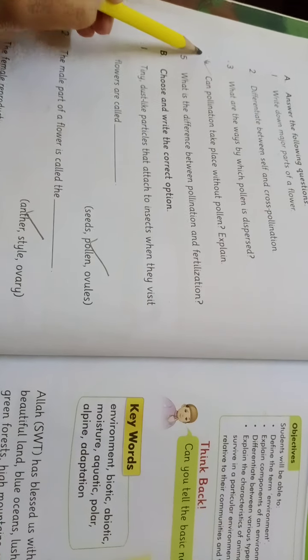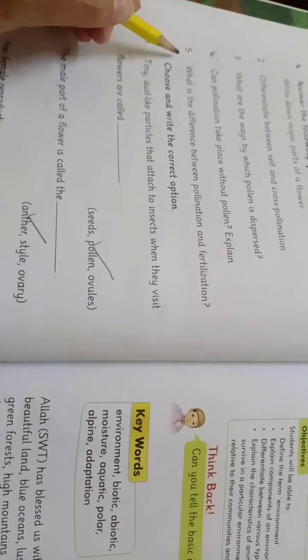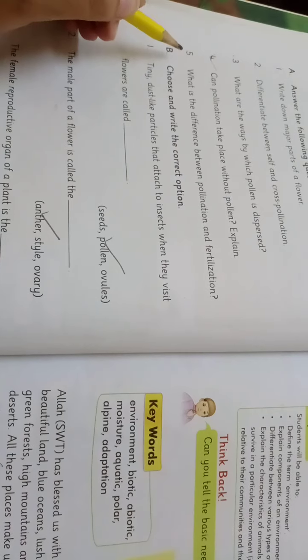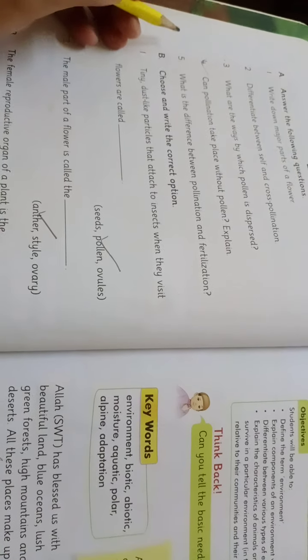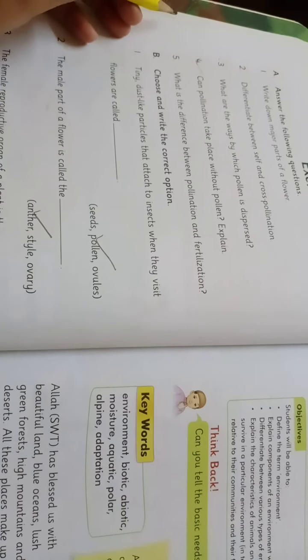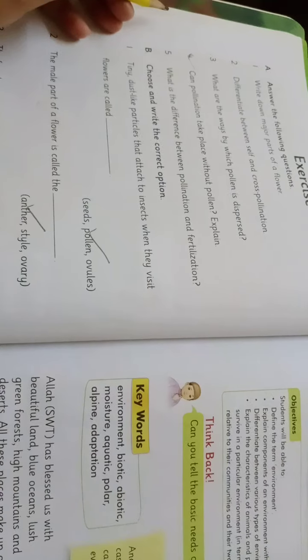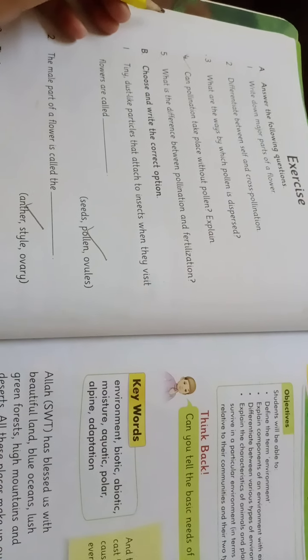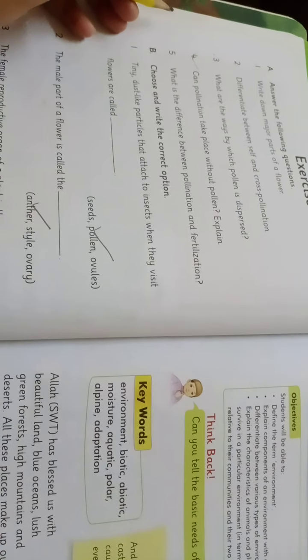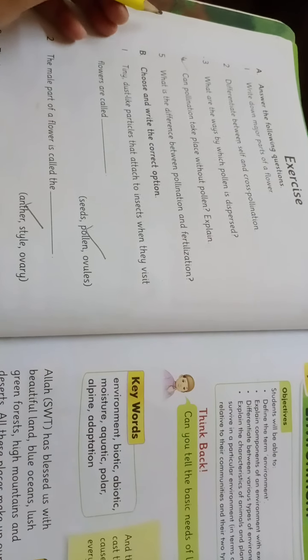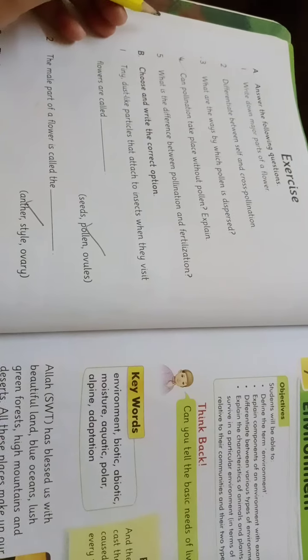So the next question is can pollination take place without pollen? Explain. So the answer is in many plants this is taken to an extreme where the flower doesn't even open and the pollen grows from the stamen directly to the stigma in the unopened flowers. This is called cleistogamy. Kya hota hai ke kuch plants aise hote hain jinke flowers unopened hote hain jo khulte nahi hain. To iske andar kya hota hai pollen grows hote hain stamen se directly kahan stigma pe unopened flower mein jis process ko kya kahte hain cleistogamy kahte hain.